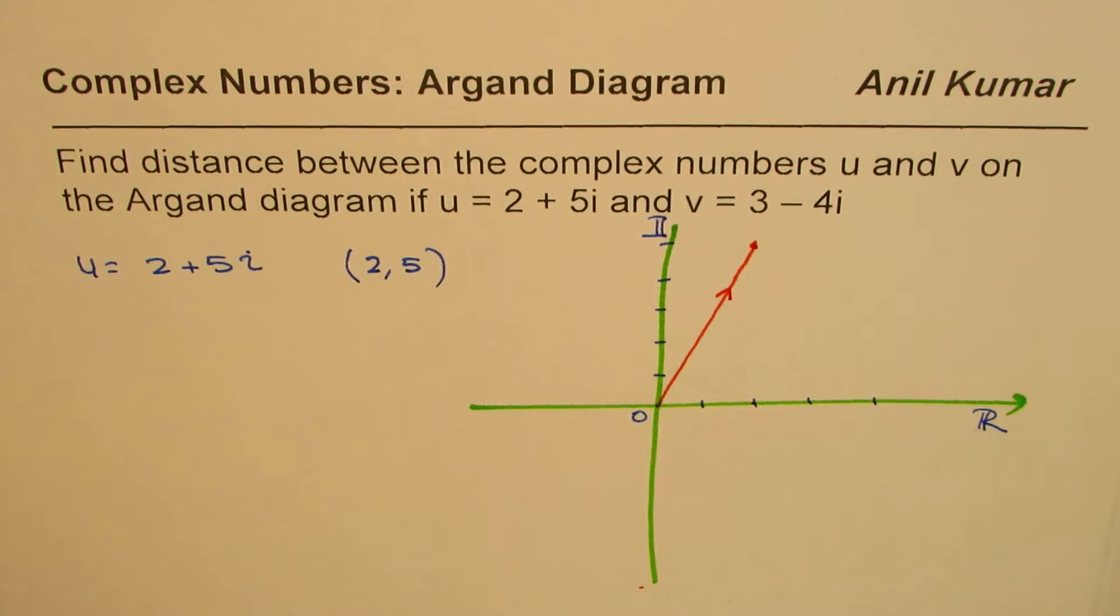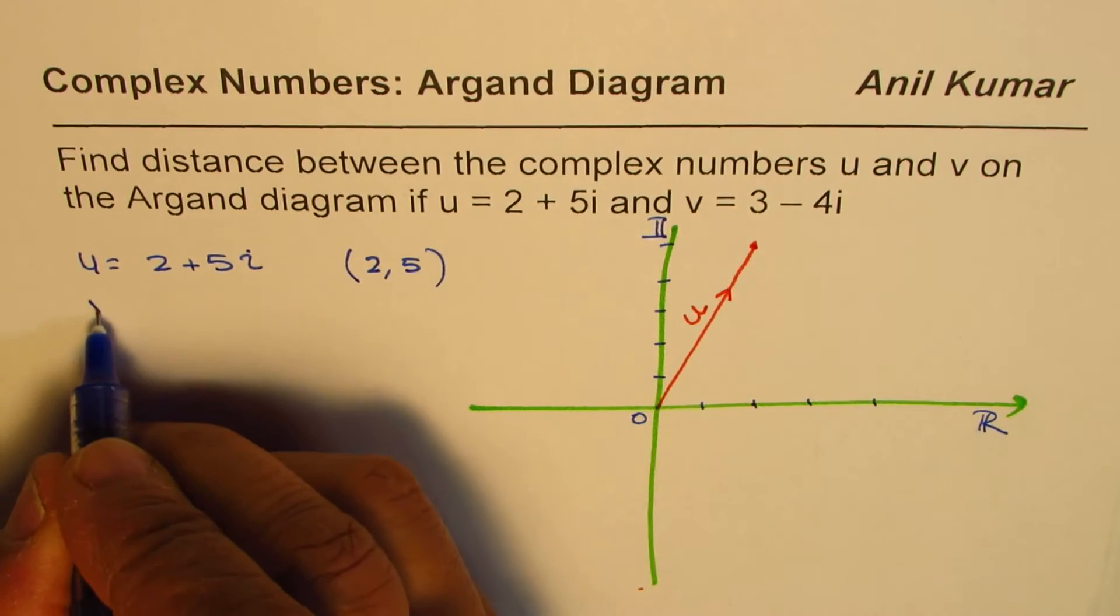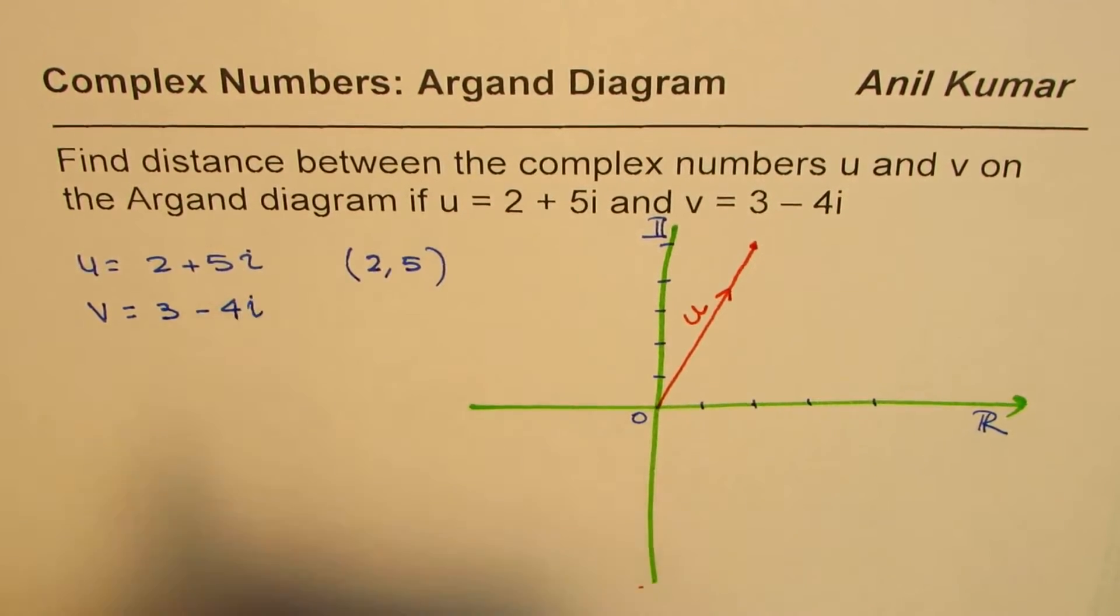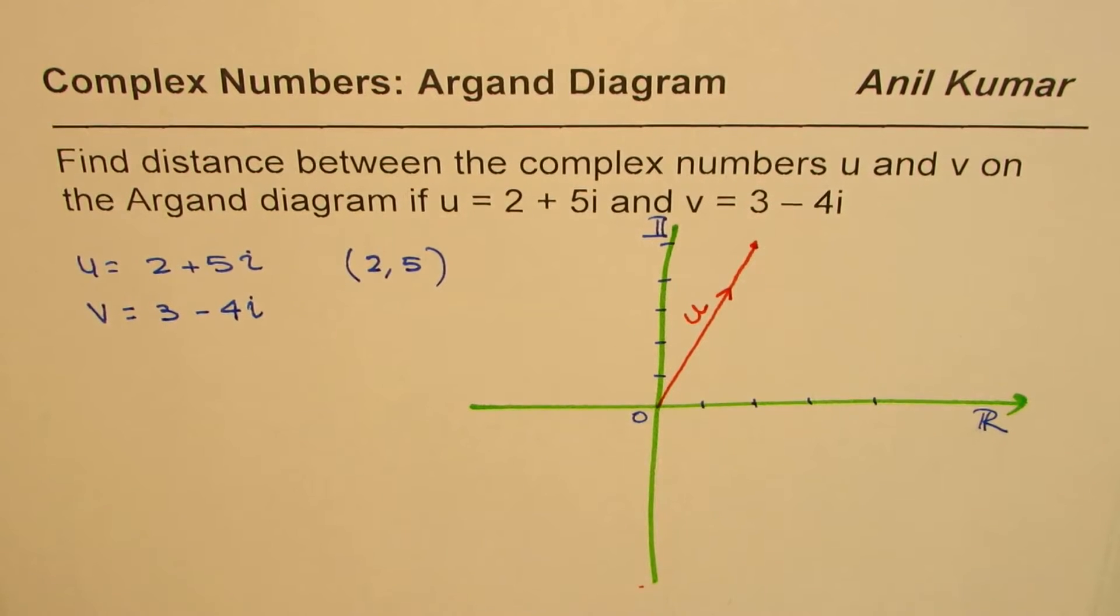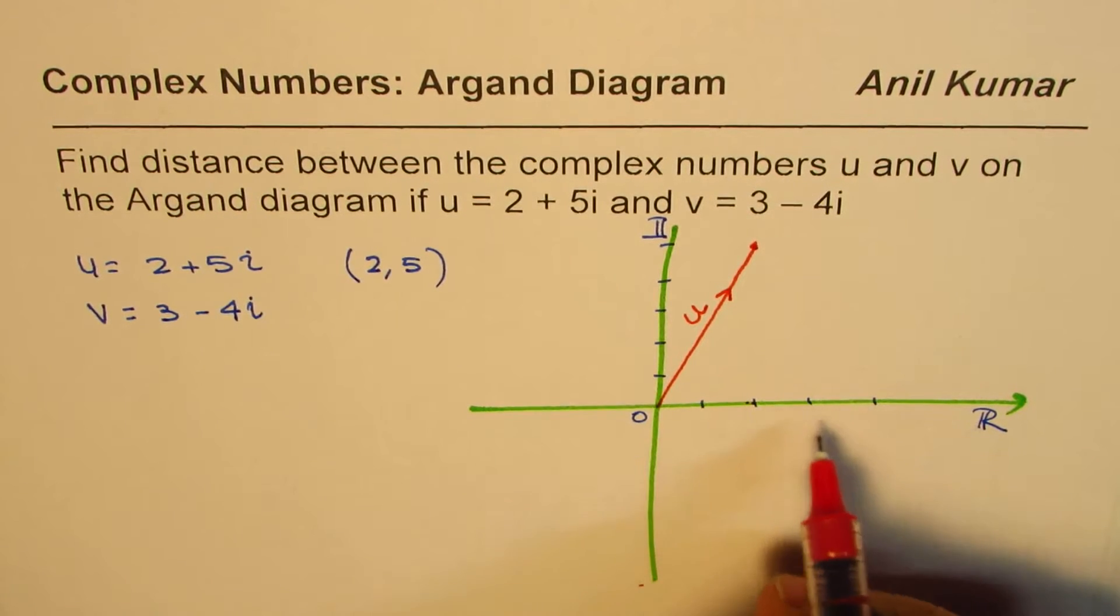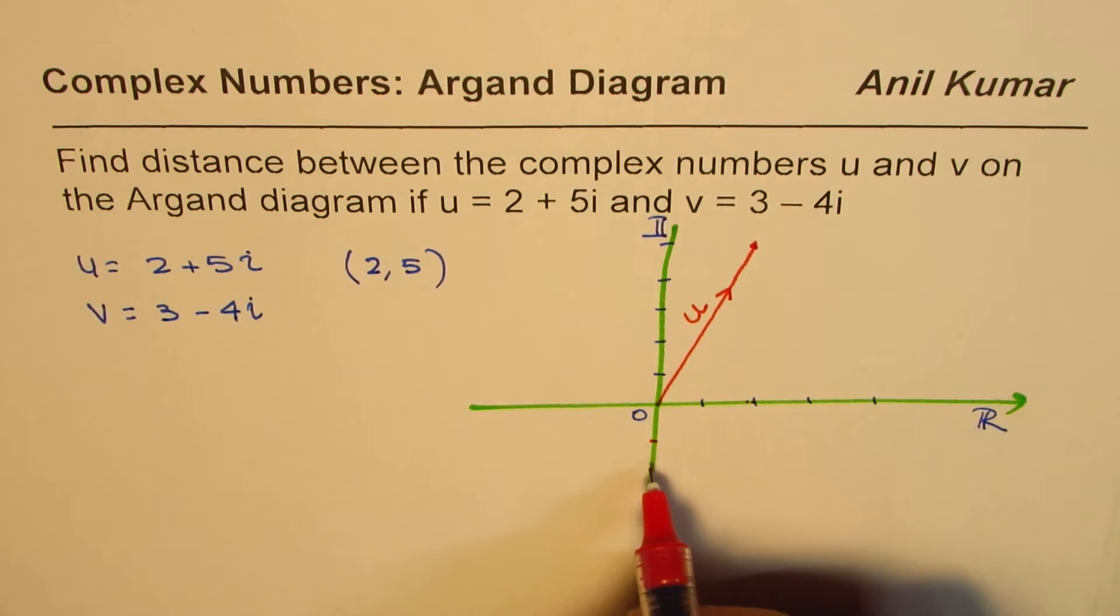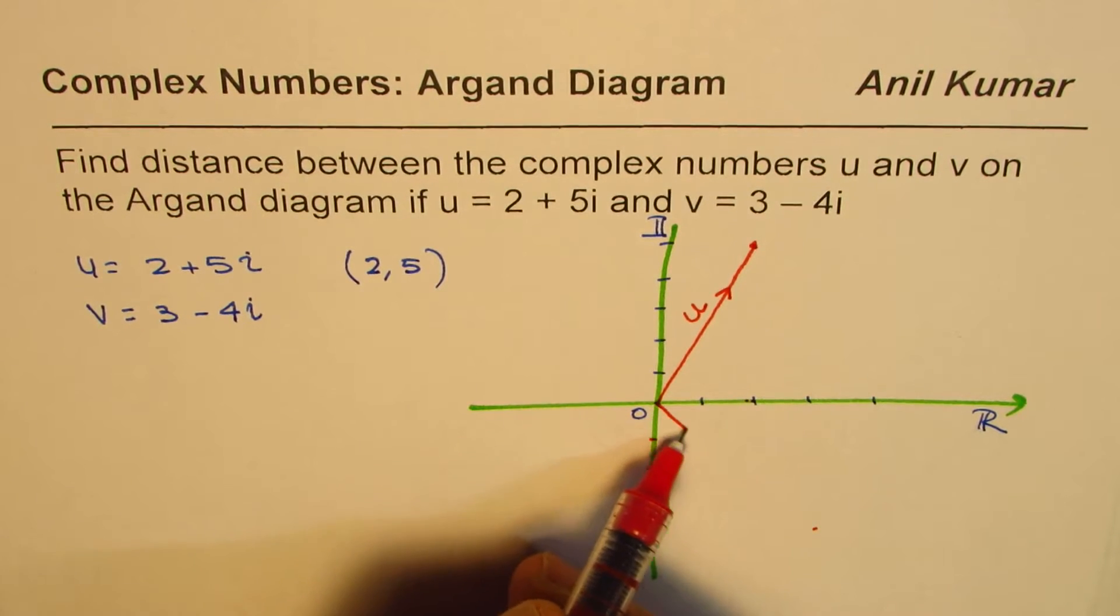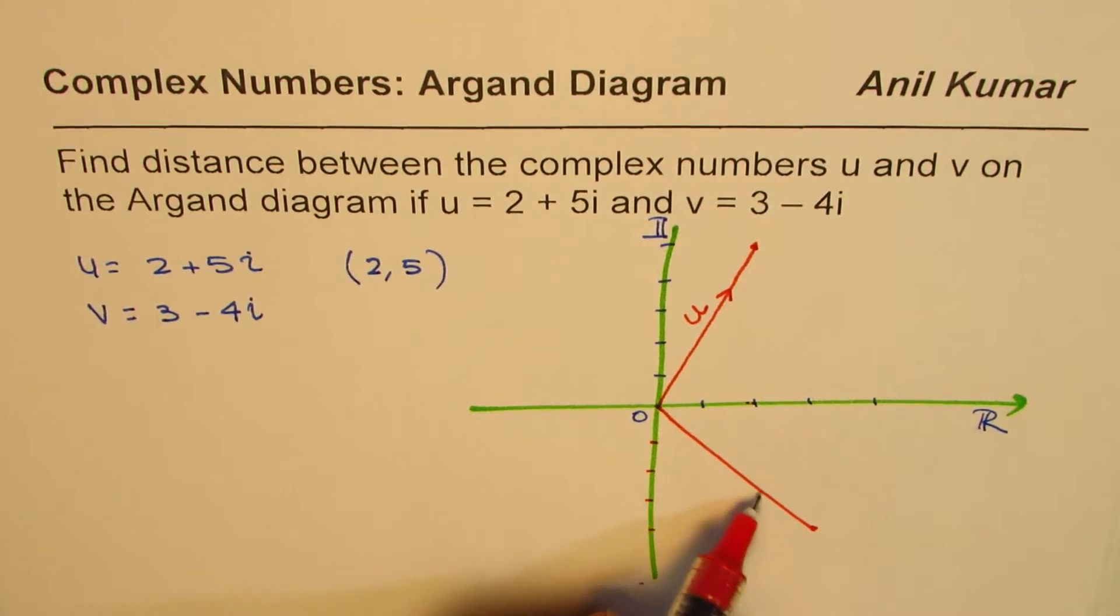Now the second one, we should write this as u. The second one for us is v. The complex number v is 3 minus 4i. So 3 minus 4i means 1, 2, 3 and 4 down: 1, 2, 3, 4. So 3 minus 4i will be something like this. So this is v for us.